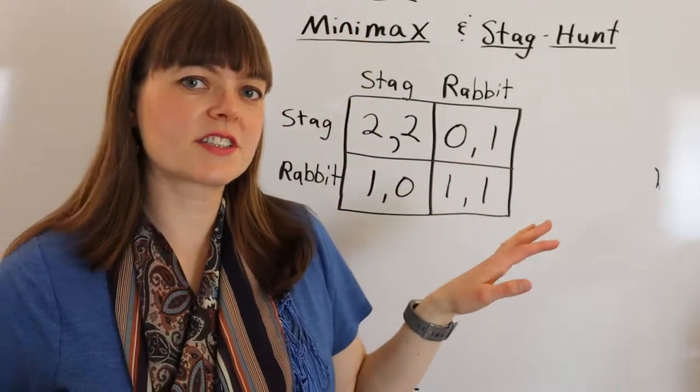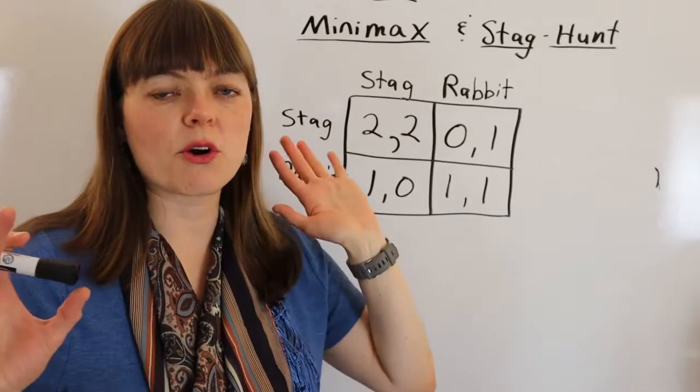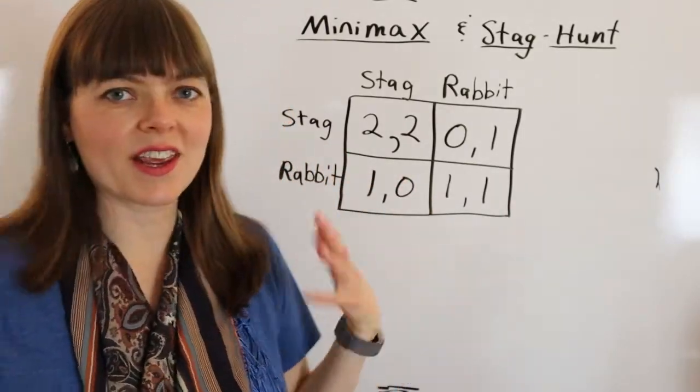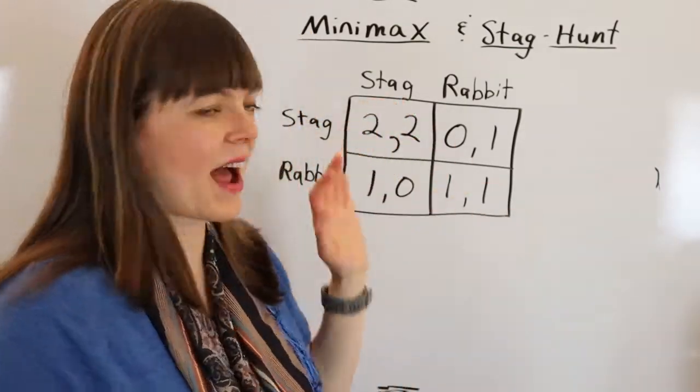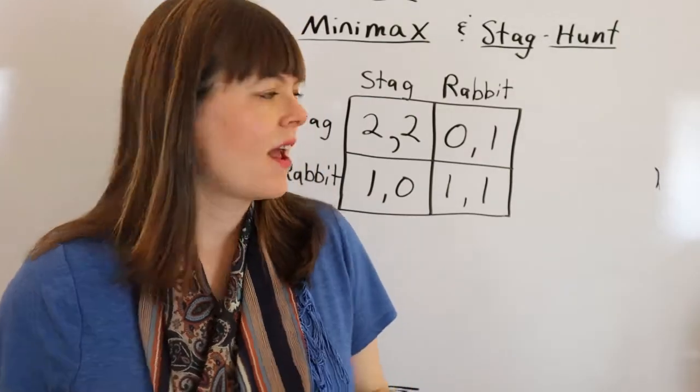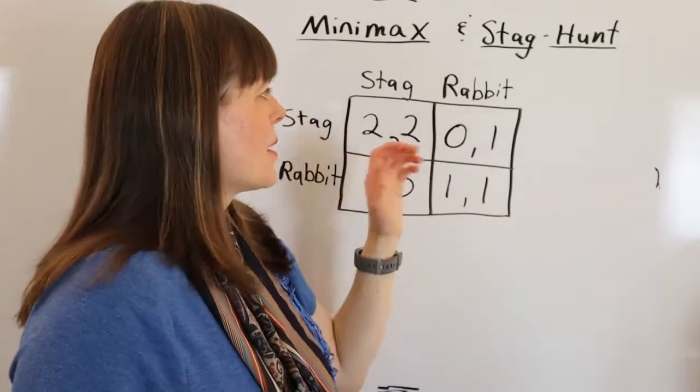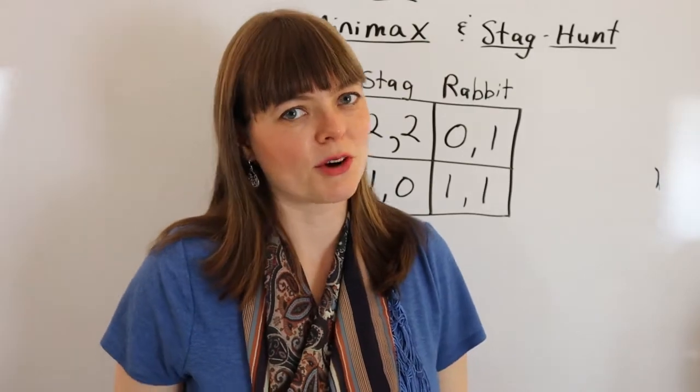So to get there, it's helpful to start with the Staghunt game from Game Theory. Now we're back in classic Nash Equilibrium mode. The story here is you can either collaborate with your tribe to hunt a stag or you can go off on your own and hunt rabbits. Of course you're going to get more meat and better meat if you hunt a stag. But if you hunt rabbits, you don't have to worry about other people following through with a collaboration.